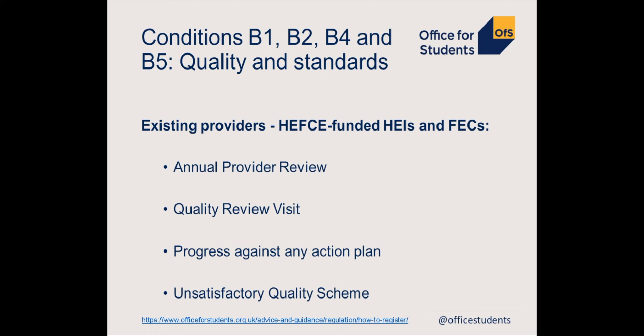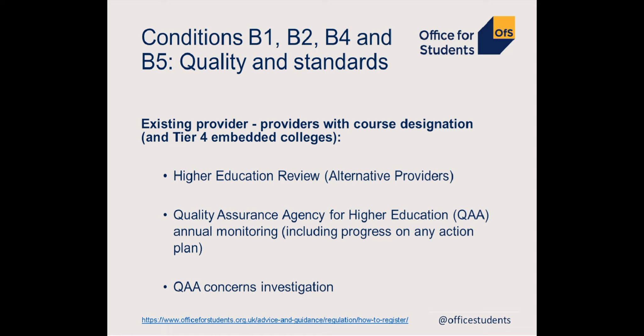For existing providers with course designation and embedded colleges with a Tier 4 licence, for conditions B1, B2, B4 and B5 we will look at your Higher Education Review outcomes from the Quality Assurance Agency and the outcomes of the QAA's annual monitoring processes. To meet this condition we would normally expect you to have achieved 'meets expectations' in relation to academic standards and quality of student learning opportunities. Where outcomes are below this standard, we will consider progress made against any required action plans and any adverse judgements from concerns investigations.